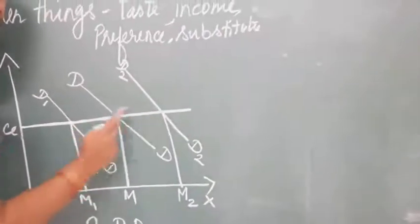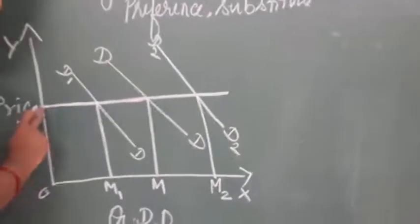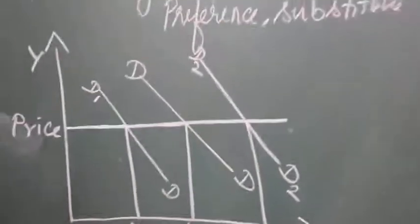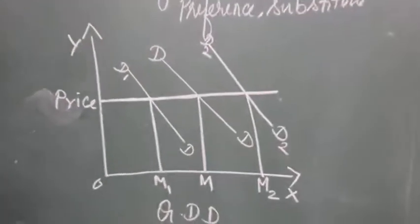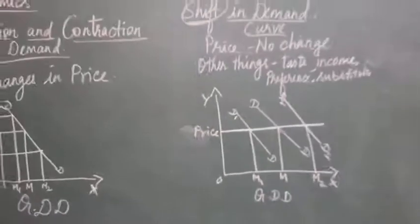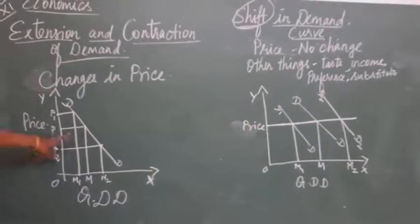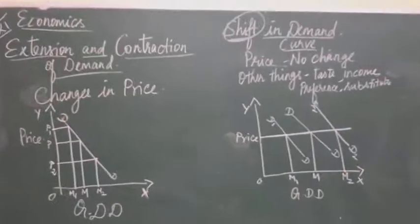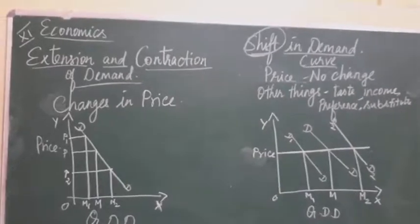This is called the shifting demand curve. In the shifting demand curve, price doesn't change — changes in taste and income only bring changes in demand. In extension and contraction, only changes in price bring changes in demand. In the shift, price doesn't bring any changes, but other things bring changes in demand.